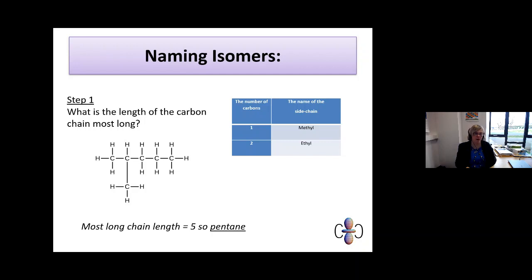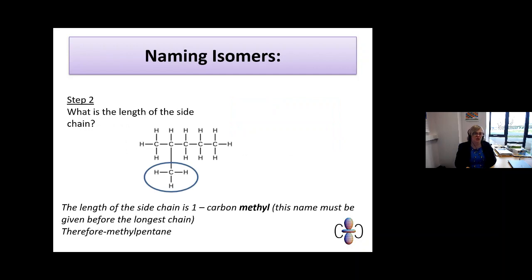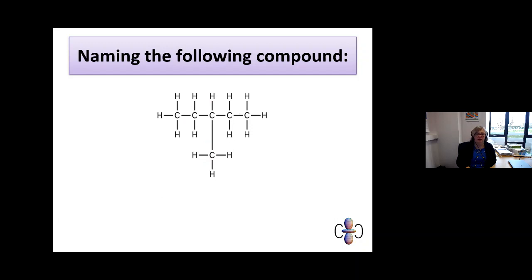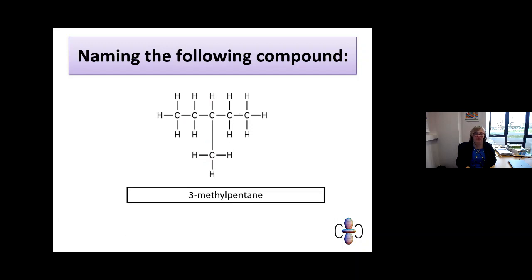Naming isomers is not dissimilar to naming normal alkanes. You look at what's coming off the main chain — if there is one carbon coming off, you call it a methyl side chain. You look at the length of the longest chain (in this case five, so 'pent') and the position it comes off. If the methyl group comes off carbon two, it is called 2-methylpentane. If it comes off carbon three, it is called 3-methylpentane.